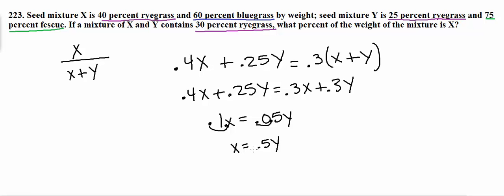Which is great because now we have two equations, or I'm sorry, not necessarily two equations. We have one equation with two unknowns, but we also have this expression here. So now going back to this expression, let's go ahead and plug in 0.5Y for X. So this is going to give us 0.5Y over 0.5Y plus Y.